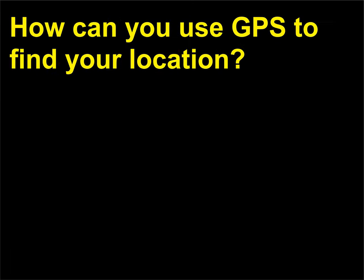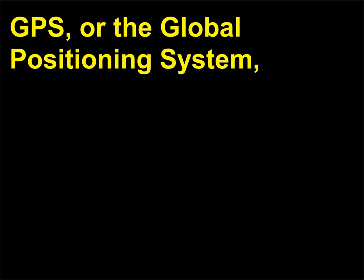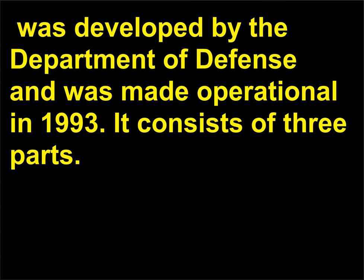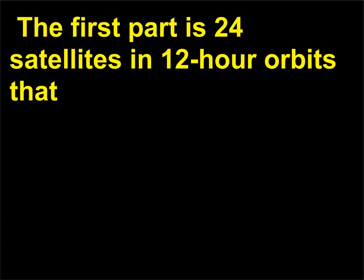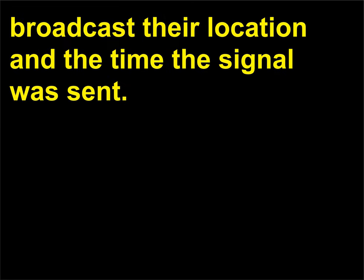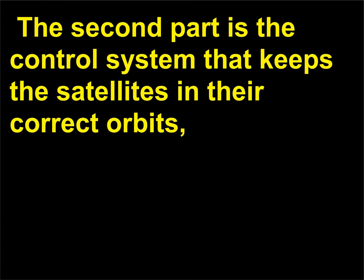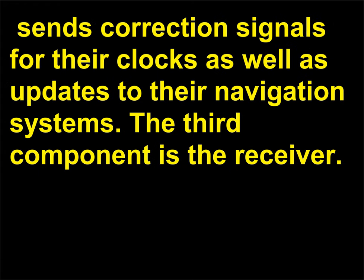How can you use GPS to find your location? GPS, or the Global Positioning System, was developed by the Department of Defense and made operational in 1993. It consists of three parts: 24 satellites in 12-hour orbits that broadcast their location and the time the signal was sent; a control system that keeps the satellites in their correct orbits and sends correction signals for their clocks and updates to their navigation systems; and the third component is the receiver.